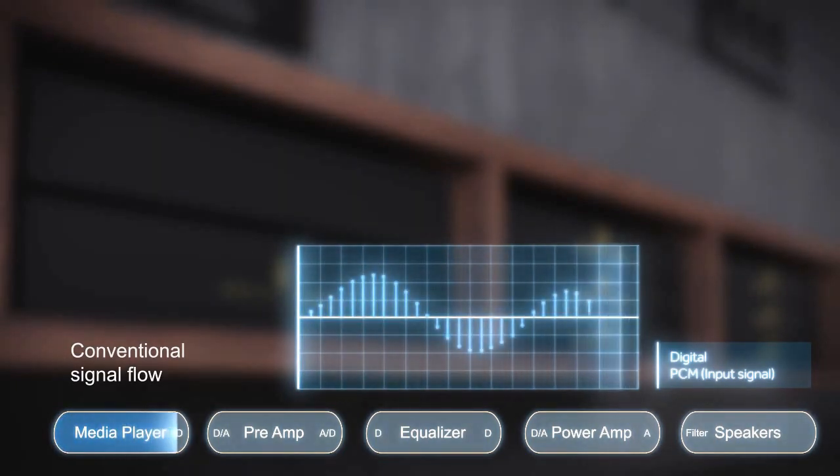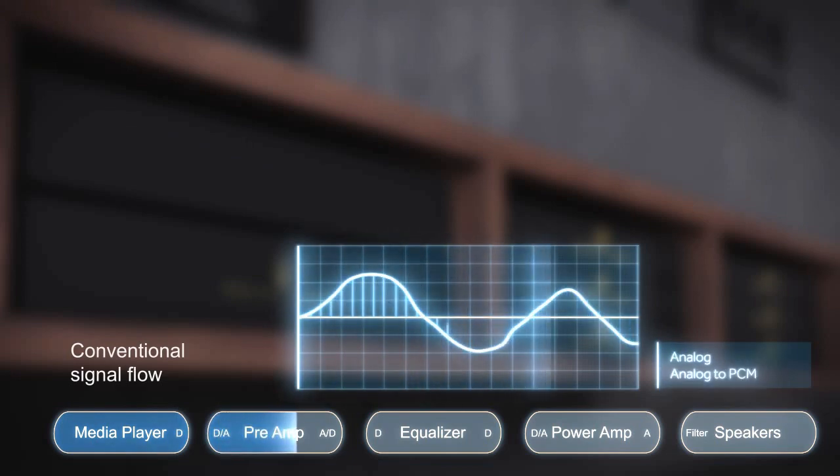From the media player, the audio signal is converted to analog in the preamp for volume attenuation. It's then converted back to digital before it is equalized to obtain the desired response. The signal is then converted to analog again before the power amplifier.